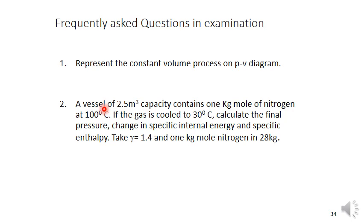Practice problem: A vessel of 2.5 m³ capacity contains 1 kg-mole of nitrogen at 100°C. If the gas is cooled to 30°C, calculate the final pressure, change in specific internal energy, and specific enthalpy. Given: γ = 1.4 and molecular weight of nitrogen = 28 kg/kg-mole. In the next class, we will discuss the constant pressure (isobaric) process and related problems. Thank you.